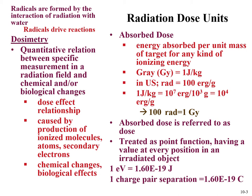The important thing to remember is the relationship between the SI unit and the US unit. The gray is one joule per kilogram. In the United States, we use the rad, where the rad is 100 ergs per gram, and one gray equals 100 rad — a two-orders-of-magnitude difference.